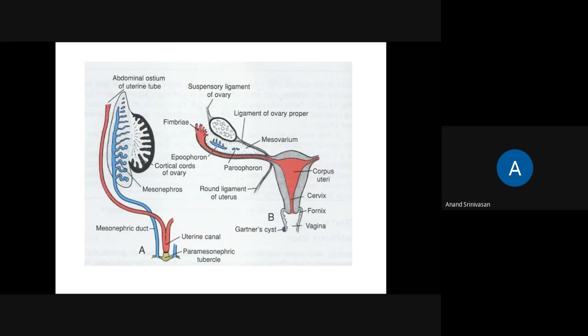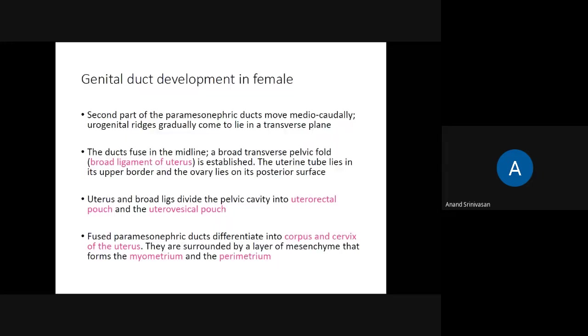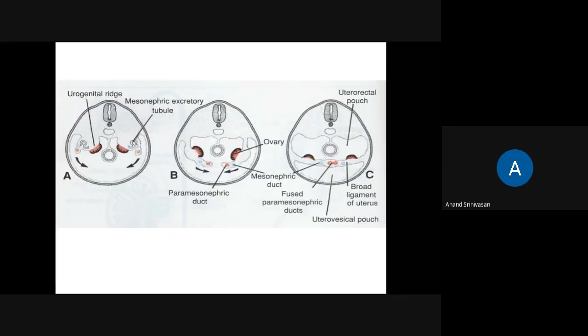The innermost part is the endometrium — these layers should have already been discussed in your physiology and histology. Here you can see once again how the broad ligament is formed. This is the gonadal ridge.